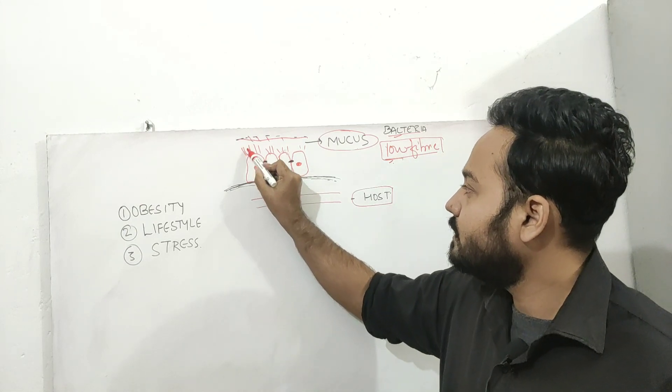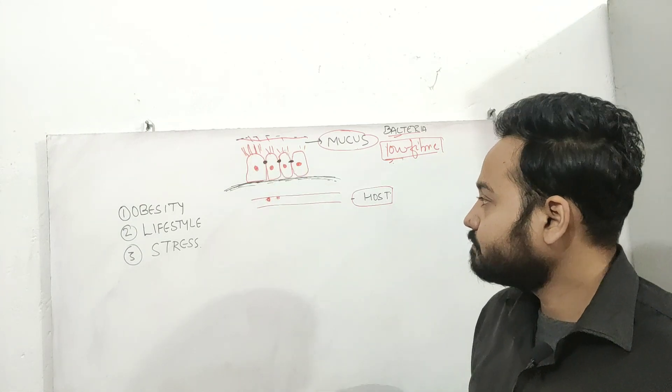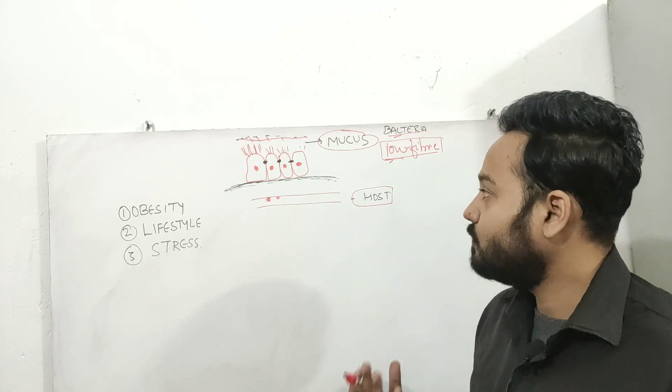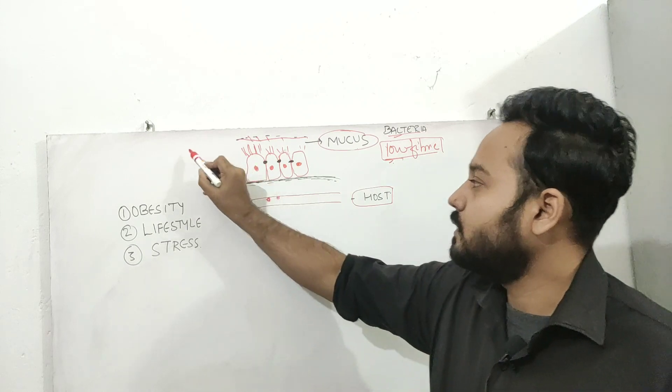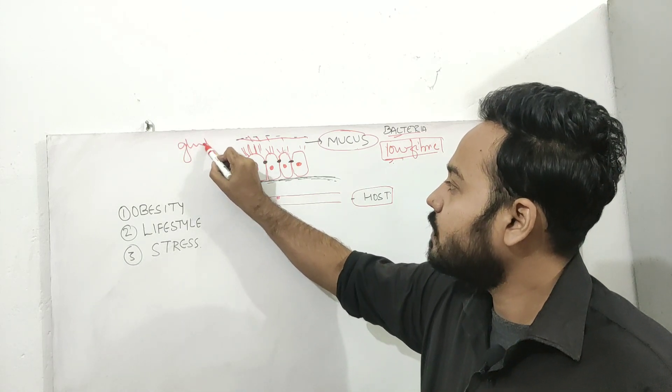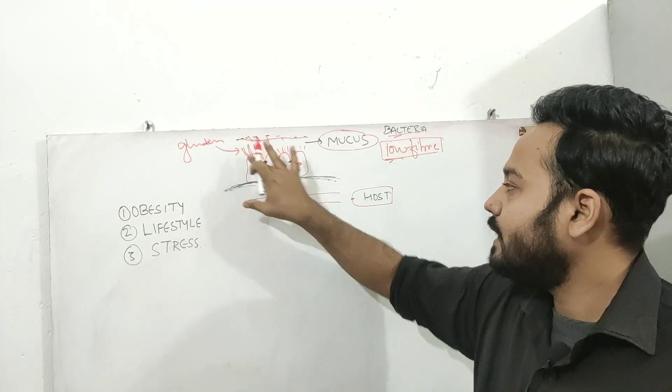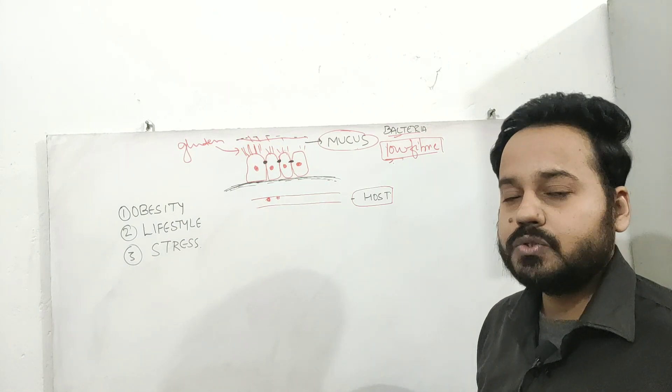Then second is here. These are villi and in genetically predisposed individuals, what will happen that certain proteins, especially gluten can cause the destruction and this can again predispose you.